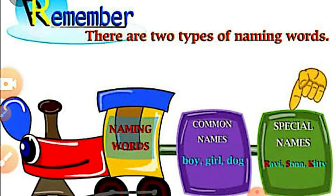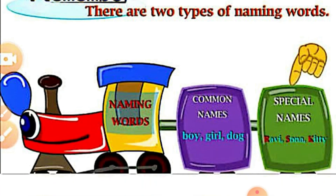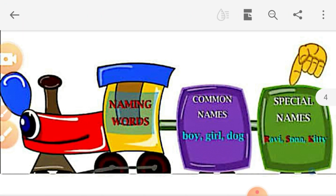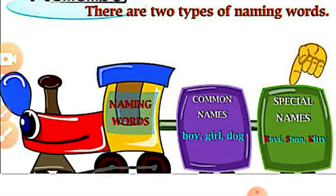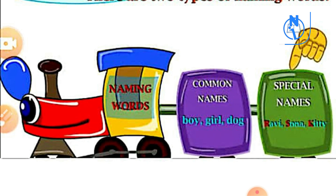Students, you have to do one activity. See, this is the train — the train of naming words. You have to draw the train like this. In one box write common nouns, and in another box write proper nouns, which means special names. You can draw it in your drawing book. It's very simple — you can do it!